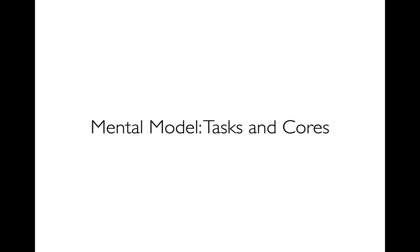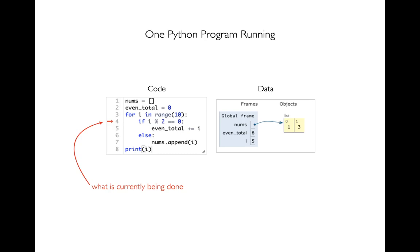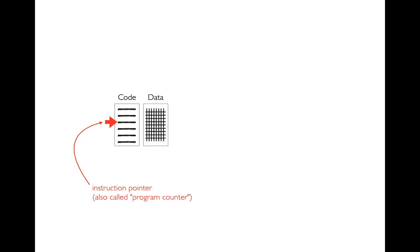First we want to think about tasks or threads — you might call them in cores. Here I have some example Python code on the left and some data on the right. There's a little red arrow pointing to whatever line of code we're currently executing. That notion of what we're currently doing shows up everywhere, not just in Python — at the machine level too, at the level of instructions the CPU understands. That little red arrow in general is called an instruction pointer — other people might call it a program counter, which means the same thing.